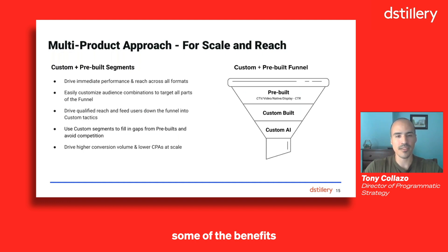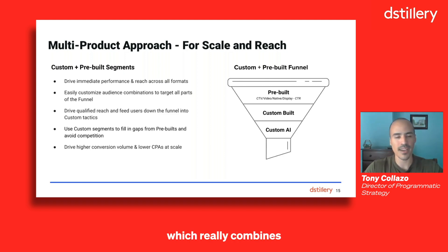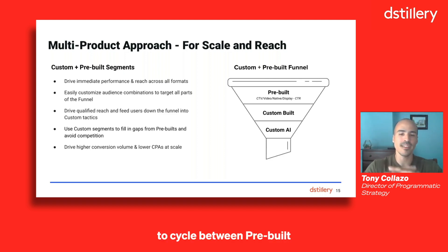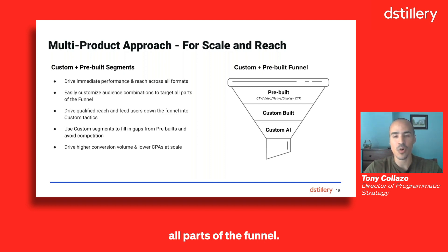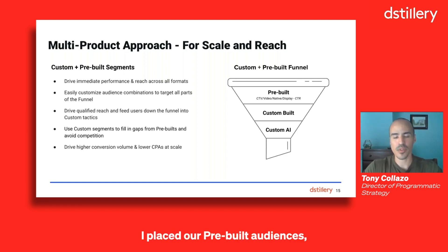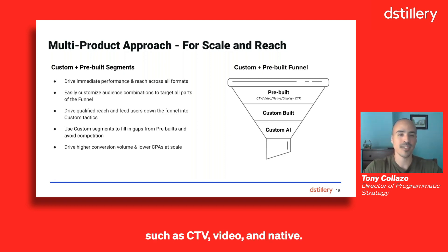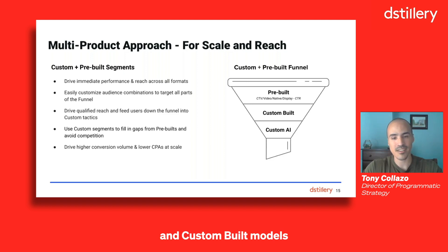Now that we've gone over the benefits and best practices of our pre-built and custom solutions, this leads us into the second strategy, which combines the advantages of both together with the goal of driving immediate performance and reach across all formats. When you have the ability to cycle between pre-built and custom options, it allows you to customize different audience combinations so you can target all parts of the funnel. On the right-hand side is a good example of this funnel approach. At the top, I placed our pre-built audiences, which are tailored at driving qualified reach, especially when paired with formats for awareness such as CTV, video, and native. The overall goal is to drive that qualified reach down the funnel to feed custom tactics and models, increasing the momentum at which a user moves down that funnel to reach that action faster.